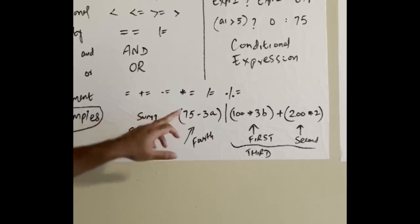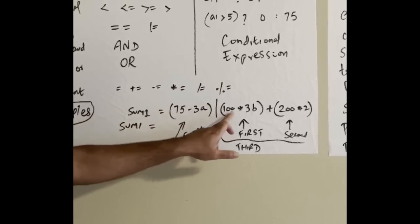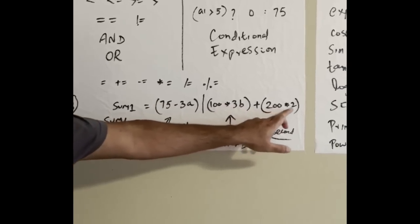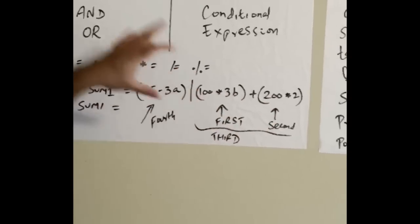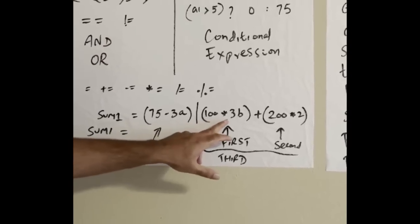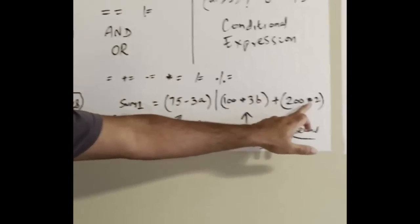Sum equals 75 minus 3a in brackets, division 100 times 3b, plus 200 times 2. Which one evaluates first according to these rules? Arithmetic operations - there's multiplication here, so this goes second, then division takes precedence third.